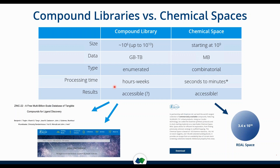The processing time for compound libraries, depending on the method, takes hours to weeks, whereas for chemical space approaches it can take seconds to minutes. The results in both cases should be accessible. With compound libraries like ZINC, you can end up with compounds that are no longer purchasable. Whereas for the chemical space, all compounds, per definition, are accessible and can be purchased and synthesized.